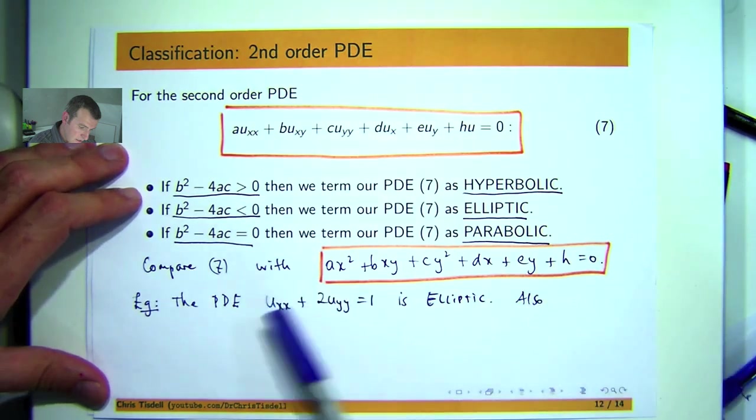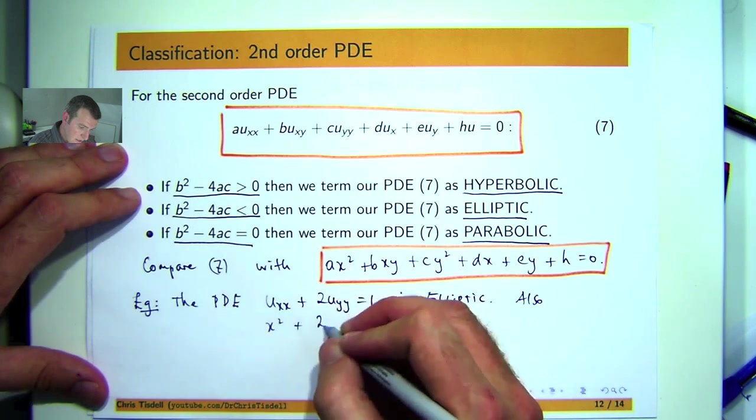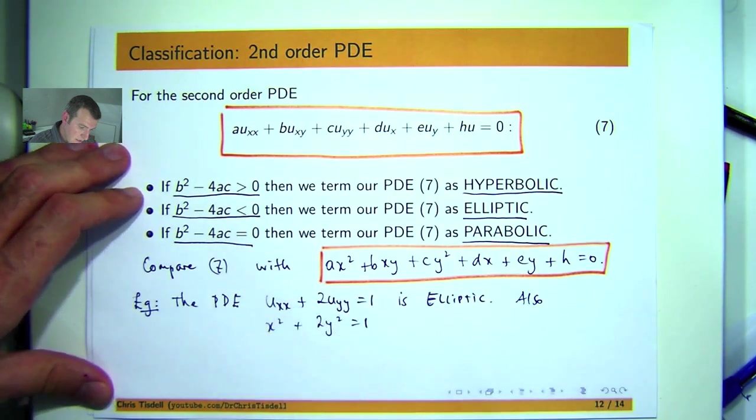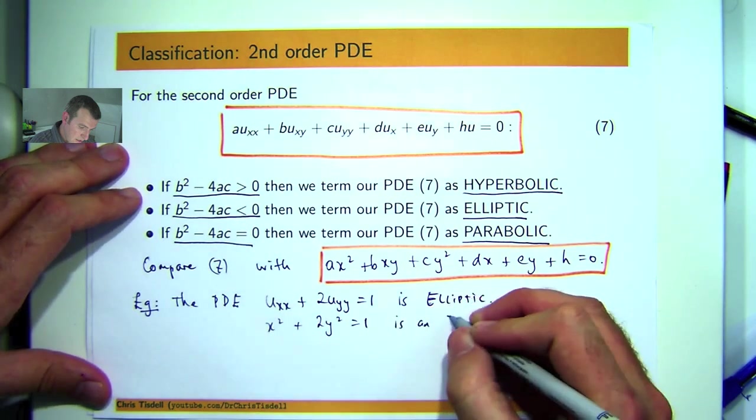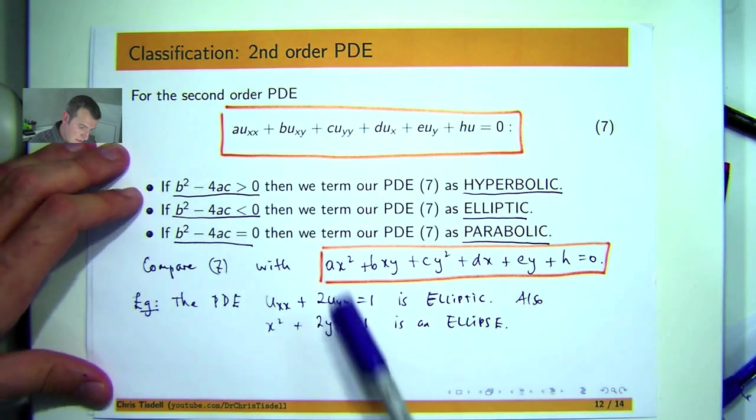So let's compare this with this type of form now. So this would be x squared, this would be 2y squared, and you'd have the 1 on the end. What kind of curve is this? This is an ellipse. So there's a connection right there.